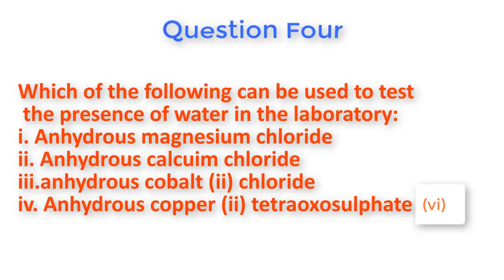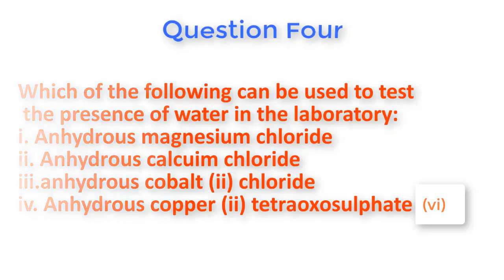Question number four: Which of the following can be used to test for the presence of water in the laboratory? One: Anhydrous magnesium chloride. Two: Anhydrous calcium chloride. Three: Anhydrous copper chloride. Four: Anhydrous copper(II) tetraoxosulfate(VI).